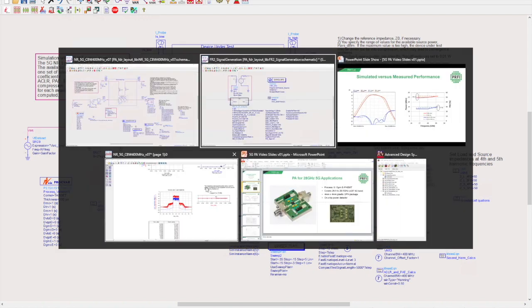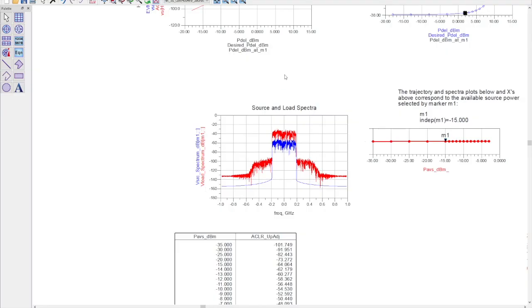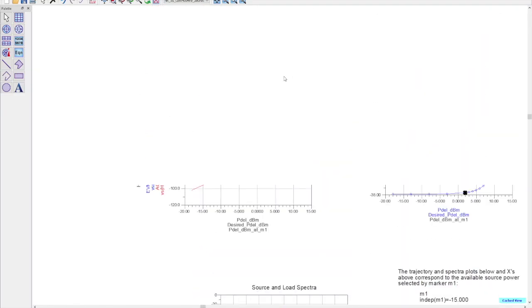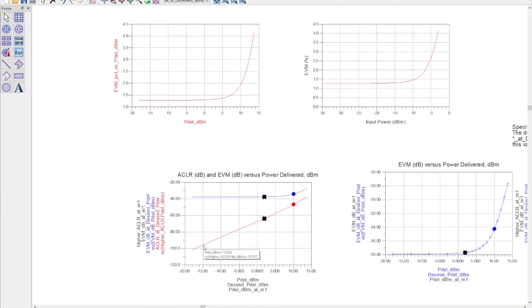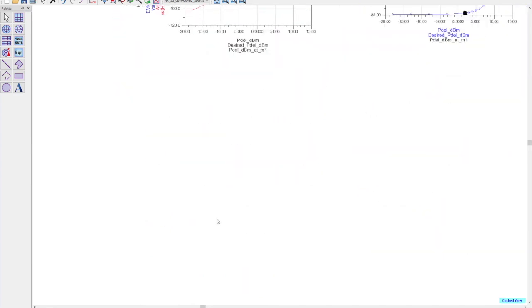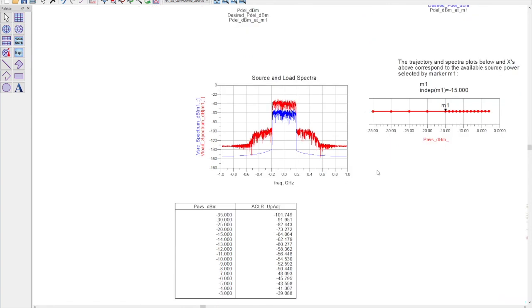These simulations can sometimes take a while so I'll show you some results that we already generated. These simulations have been done at a fixed frequency of 28 GHz and the input power has been swept. We can plot ACPR and EVM versus output power and we can also look at the spectrum plots. We can see that this signal has a 400 megahertz bandwidth and the input signal is in blue and the output signal is in red.